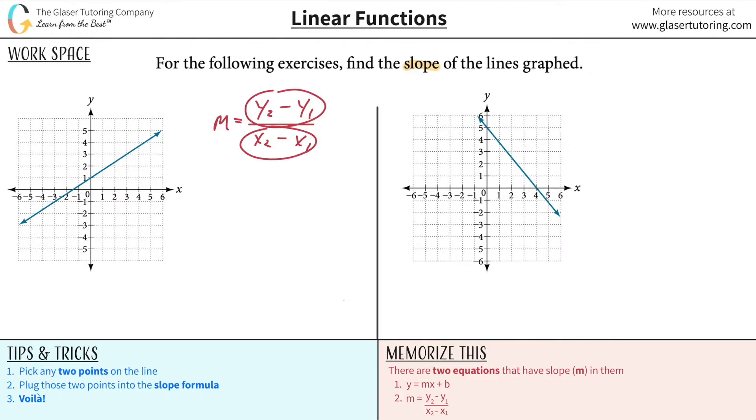You might know this as rise over run, or delta y over delta x, but I like to just memorize it in this form. It helps remind me that I need two points in order to calculate the slope of a linear line.